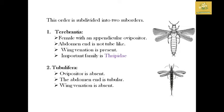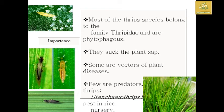These insects mainly belong to the family Thripidae and are known as phytophagous, meaning they feed by sucking plant sap. They are entirely dependent on plant organisms. Some are vectors of plant diseases. A notable example is the rice thrips, which is a pest in rice and rice nurseries.